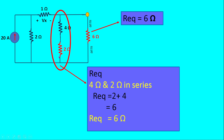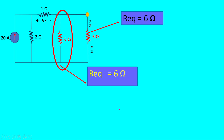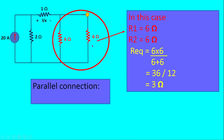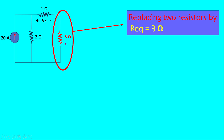The 2 ohm and 4 ohm resistors are also in series, so we add them: 2 plus 4 gives 6 ohms, replacing those two resistors with a single 6 ohm equivalent. Then those two resulting 6 ohm resistors are connected in parallel, so the equivalent resistance is 6 × 6 divided by 6 + 6, which equals 36 divided by 12, giving 3 ohms. We replace those two resistors with a single 3 ohm equivalent resistance.